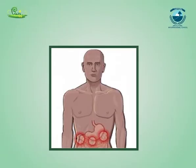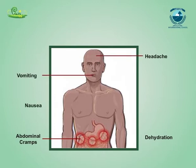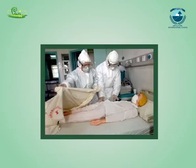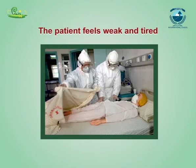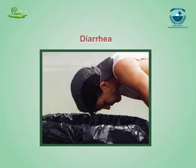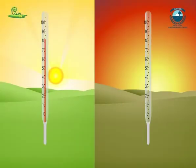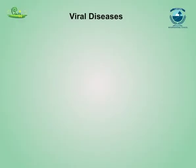Symptoms of cholera include abdominal cramps, dehydration, headache, vomiting, and nausea. Typhoid is caused by the bacterium Salmonella and is transmitted by the ingestion of food or water contaminated with feces from an infected person. The patient feels weak and tired, with symptoms including headache, backache, diarrhea, constipation, and loss of appetite. Temperature rises and remains high for about 10 to 14 days, rising in the evening and falling in the morning.